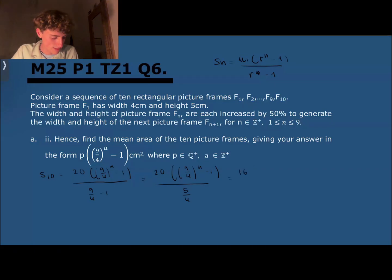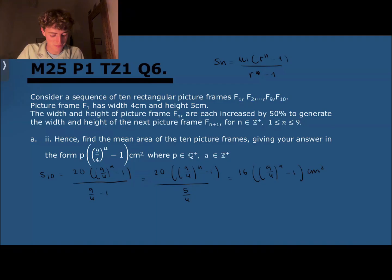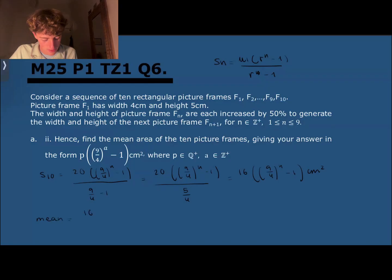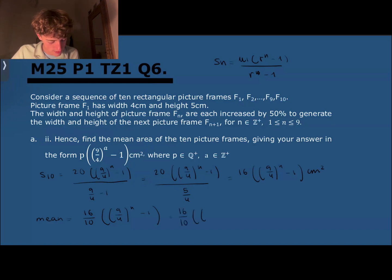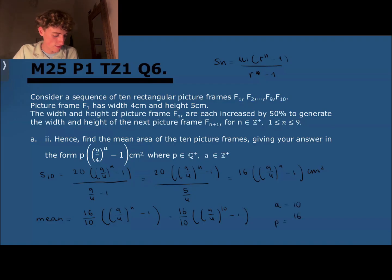So S(10) equals 16 times (9/4) to the power of n minus 1. But we need to divide this by 10 to get the actual mean. The mean will be (16/10) times (9/4) to the power of n minus 1. With n equal to 10, the mean is (16/10) times (9/4) to the power of 9, where a equals 10 and p equals 16/10, which simplifies to 8/5.